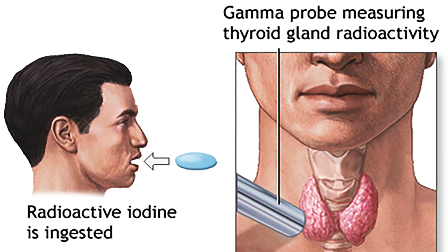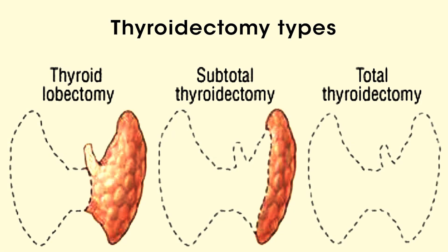Treatment options for hyperthyroidism include antithyroid drugs — oral medications that decrease the effect of thyroid hormone on metabolism. Radioactive iodine can also be used; it is taken up by thyroid tissue and destroys it, lowering thyroid activity. The third option is surgery — subtotal thyroidectomy — where part of the thyroid gland is removed to reduce hormone secretion.